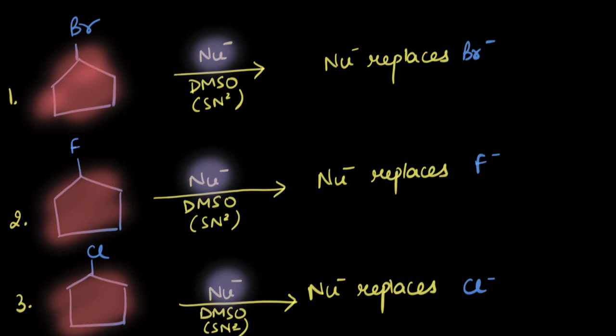So what do we compare here? We talked about how the more stable the leaving group, the faster it would leave and the greater the rate of the reaction. To compare the stability of these anions, we use the electronic effects — the ones we studied in previous units.